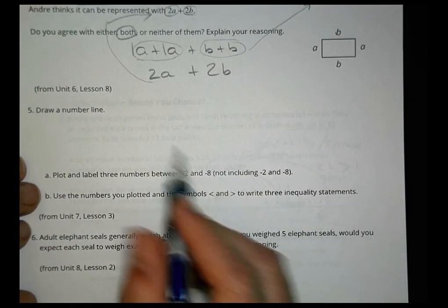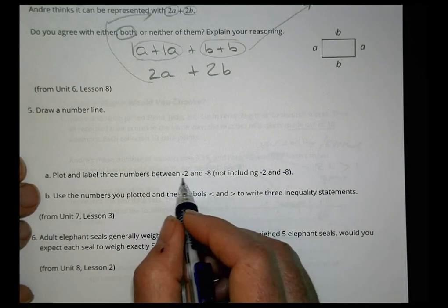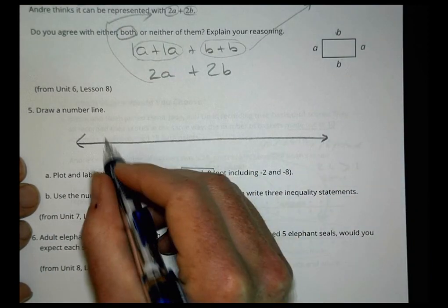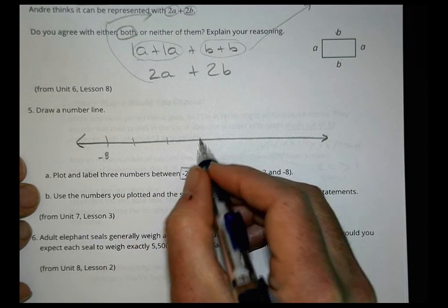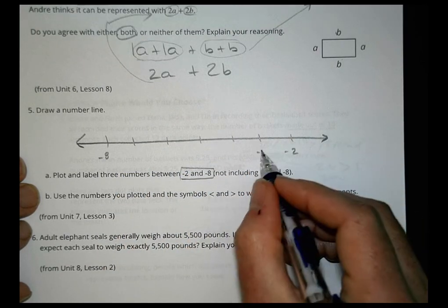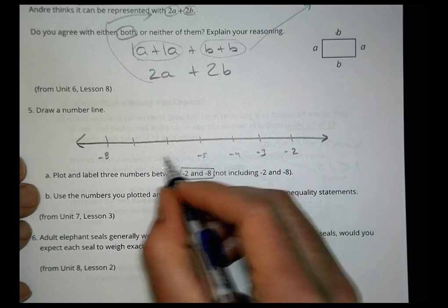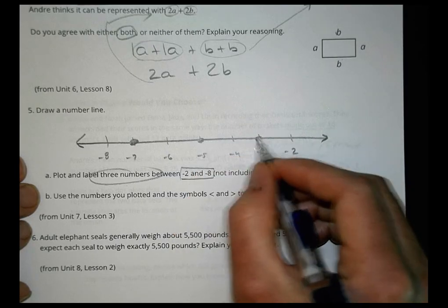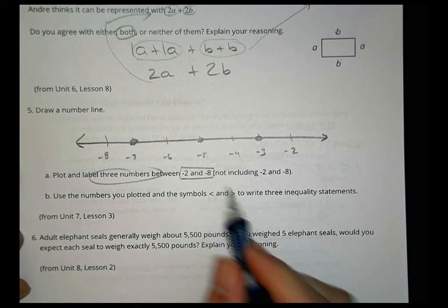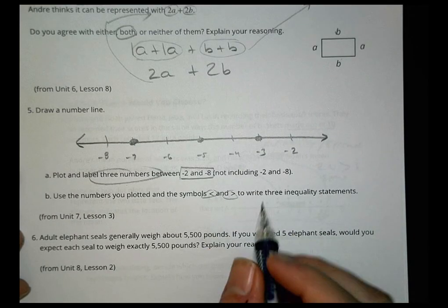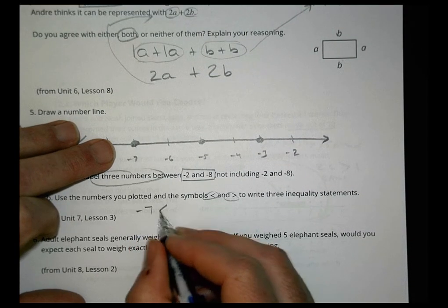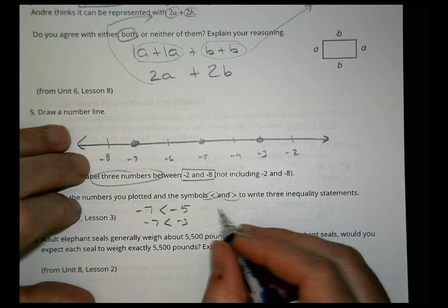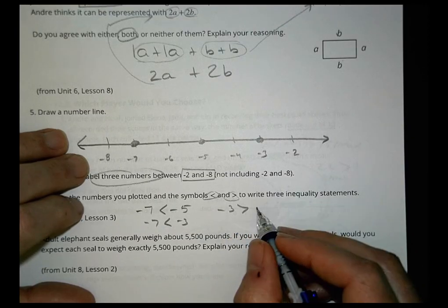Draw a number line. Plot and label three numbers between negative 2 and negative 8, not including those endpoints. We can put negative 8 here, then negative 7, 6, 5, 4, 3, 2. I'm going to plot three points: negative 7, negative 5, and negative 3. Then use those numbers and the symbols less than or greater than to write three inequality statements. Negative 7 is less than negative 5; negative 7 is less than negative 3; negative 3 is greater than negative 7.